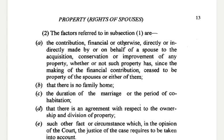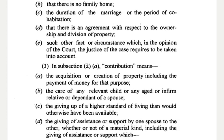B. That there is no family home — so the factors referred to — maybe they are renting somewhere or living in somebody else's house, not a family member's house. C. The duration of the marriage or the period of cohabitation. D. That there is an agreement with respect to the ownership and division of property — so the spouses had already made an agreement. E. Such other fact or circumstance which in the opinion of the court the justice of the case requires to be taken into account.